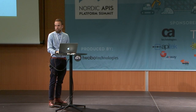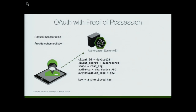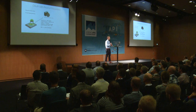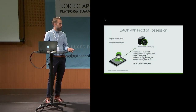Now comes the interesting part: how do we now take this into becoming a non-transport-layer-dependent token exchange? So we talk to the OAuth server again and say: I am this client. I have this secret that's been provisioned somehow. I want to read the EKG on device ABC. Here's my authorization code that proves that the user authenticated and allowed me to do this. And here's the short-lived key. The client generated a key — maybe a symmetric key or an asymmetric key pair — and told the AS, I'm going to use this key.